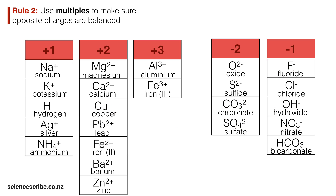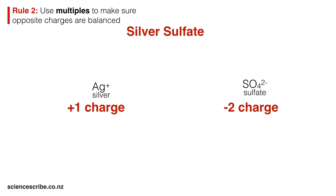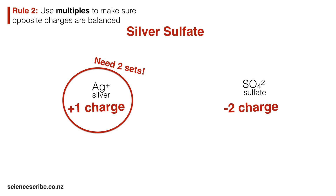In another example using multiples, let's write the formula for silver sulfate. Comparing their charges, silver has a plus one charge and we need two sets of silver to balance out the minus two charge from sulfate. When we write the formula, I write Ag for silver and SO4 for sulfate, but because I need two sets of silver I show a subscript 2 at the bottom right-hand corner of Ag, giving Ag2SO4.